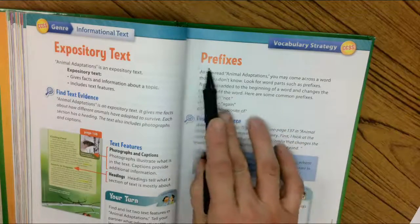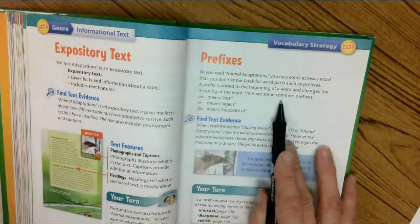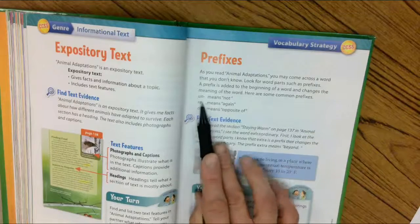Keyword pre, pre comes before—before the beginning of a word and changes the meaning of the word. Here are some common prefixes. Un means not.